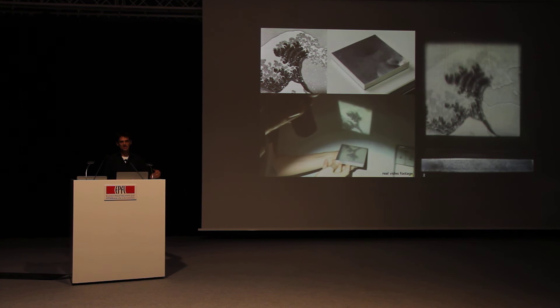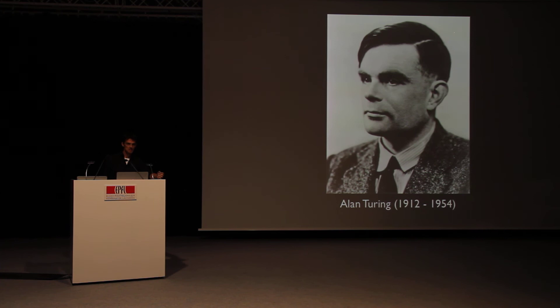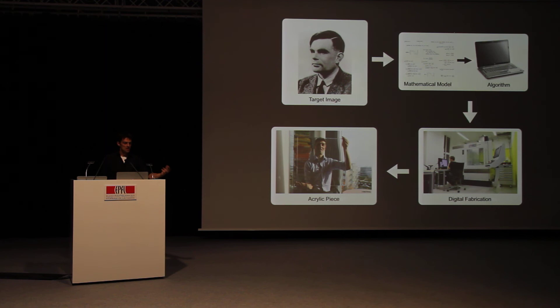Then we wanted to try something a little bit more ambitious. We took a different kind of image — this portrait that you saw earlier, which is a picture of Alan Turing. Alan Turing is a very famous mathematician who many consider to be the father of computer science. The question we asked is: can we draw this portrait using a caustic image? This time we wanted to do a refractive caustic, meaning a transparent object that bends the light rays in order to draw this picture. We ran our algorithm, sent the computation to a digital fabrication machine, and created this piece of acrylic glass that you see me holding in my hand.